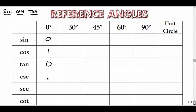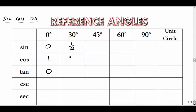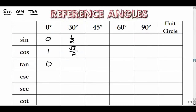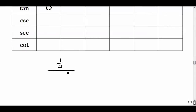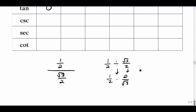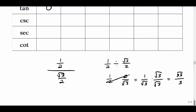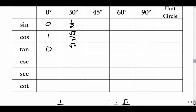The sine of 30 degrees is one half and the cosine of 30 degrees is radical 3 over 2. The tangent of 30 is sine over cosine: one half divided by radical 3 over 2. Using keep-it-switch-it-flip-it, the 2s cancel and we get 1 over radical 3. Rationalizing by multiplying top and bottom by radical 3 gives us radical 3 over 3.